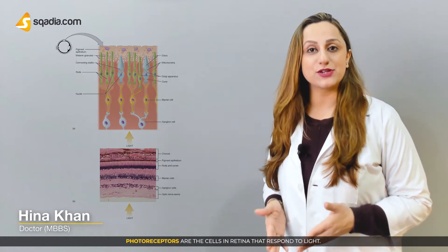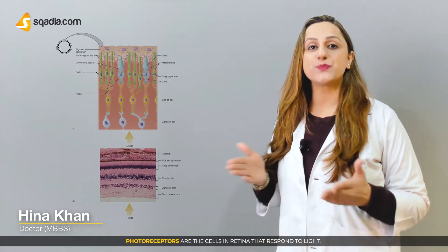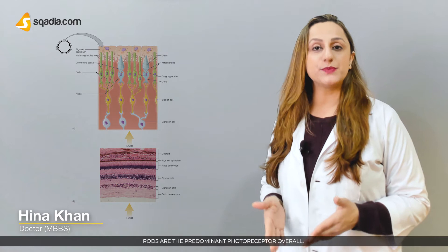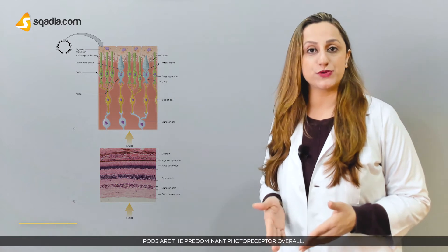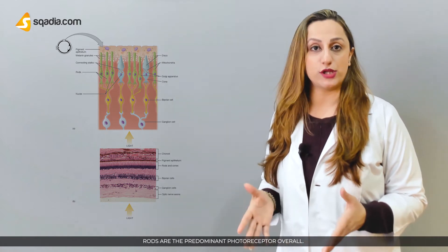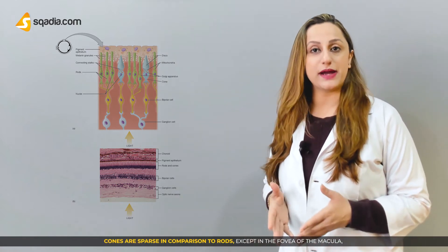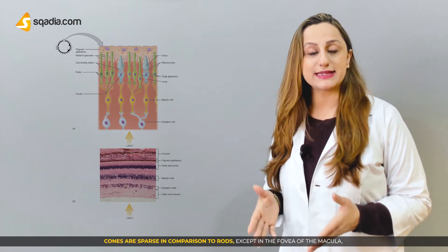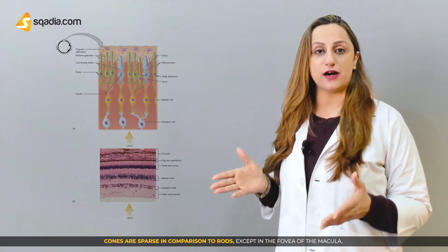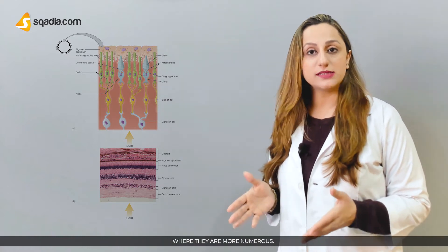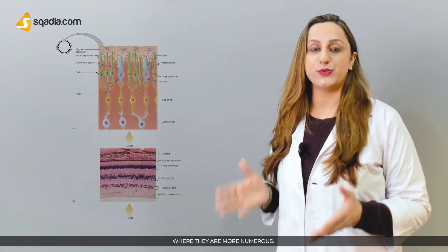Photoreceptors are the cells in the retina that respond to light. Rods are the predominant photoreceptors overall. Cones are sparse in comparison to rods, except in the fovea of the macula, where they are more numerous.